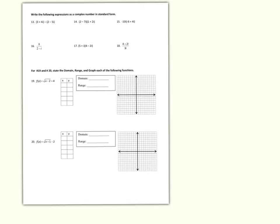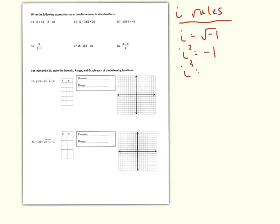Page two of the chapter 4A review covers questions 13 through 18, which deal with i rules. Here's a recap: i is the square root of negative one, so i squared equals negative one. i to the third equals the square root of negative one multiplied three times, giving negative i. i to the fourth is i squared squared, which is negative one times negative one, giving one. When you multiply i times itself, you get rid of the radical — that's the key point for these questions.